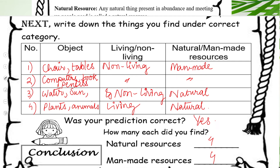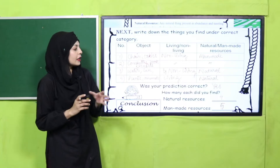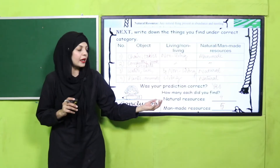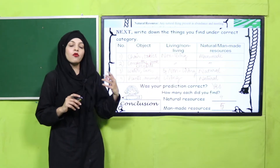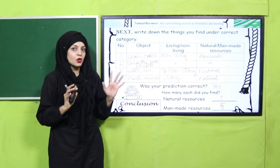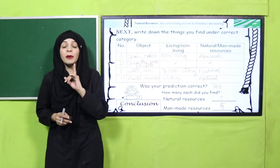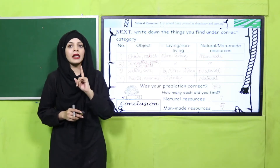You will also write the conclusion — whether your prediction matched reality — and write the total count of natural resources found versus man-made ones. This is how you will finish the worksheet. It will be really fun — follow the timeline and follow the rules.